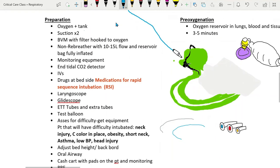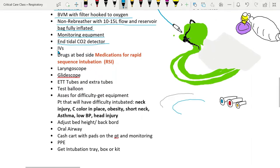In preparation section, the nurse may have to ensure the necessary equipment is in the room, such as oxygen access at the wall is functioning, an extra oxygen tank is in the room, two sets of suction in case of emesis and secretions, bag valve mask with filter hooked to oxygen, non-rebreather with 15 liters flow rate and reservoir bag fully inflated, monitoring equipment is on and working, and end-tidal CO2 detector is in the room, IVs are functioning.